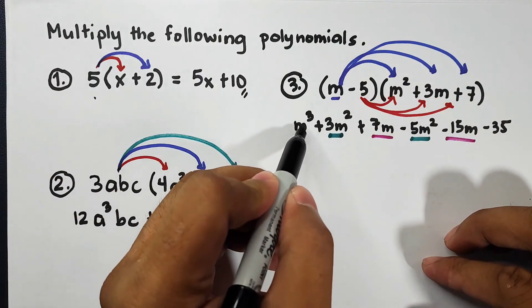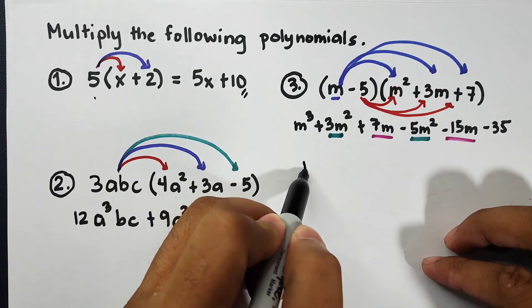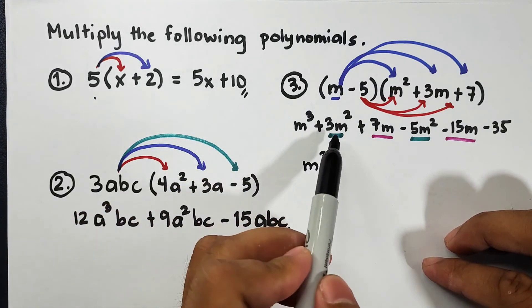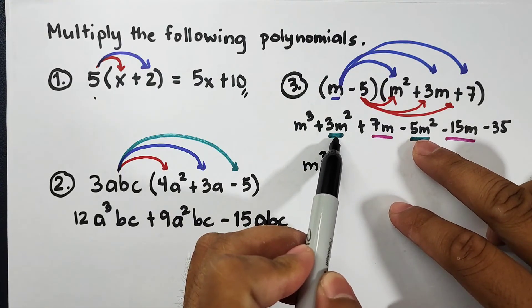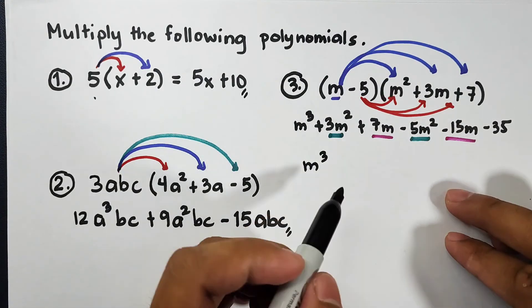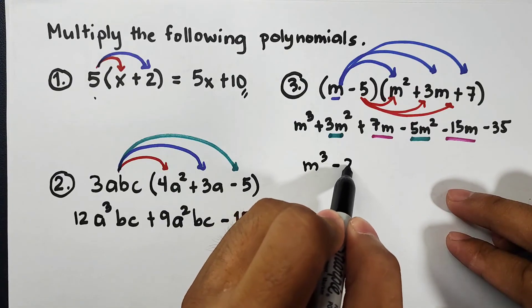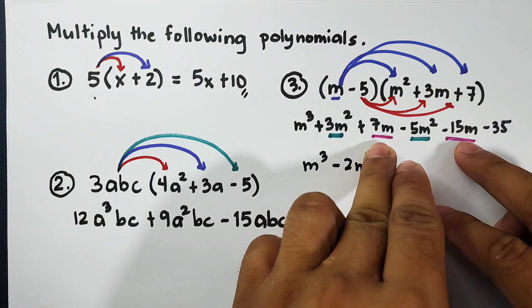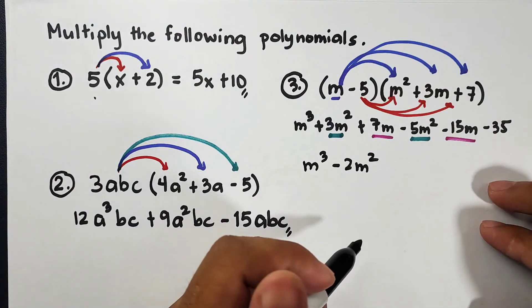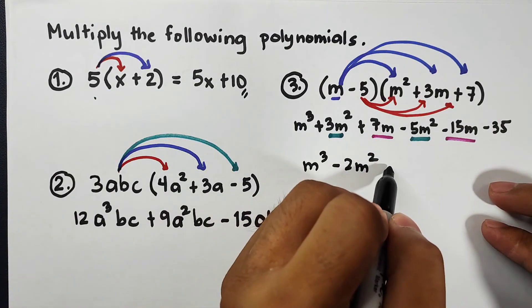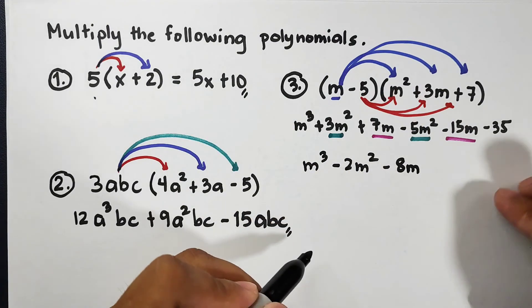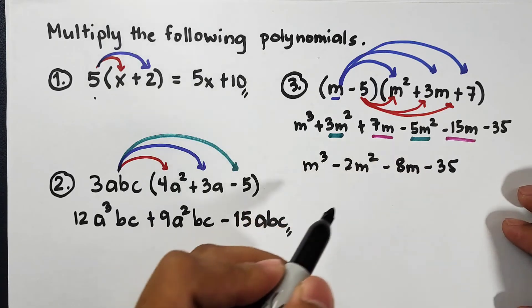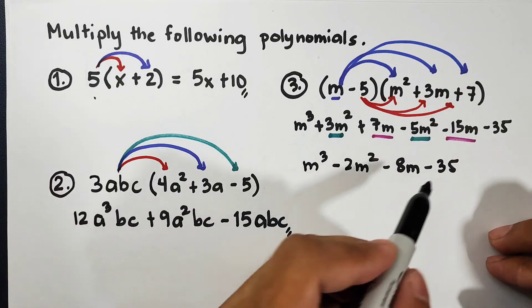What we need to do is combine them. First copy m³, since it has no pair. Then 3m² minus 5m² is negative 2m². Next, another like terms: 7m minus 15m is negative 8m. And lastly, your constant which is negative 35. So this is the product: m³ minus 2m² minus 8m minus 35. And that's it.